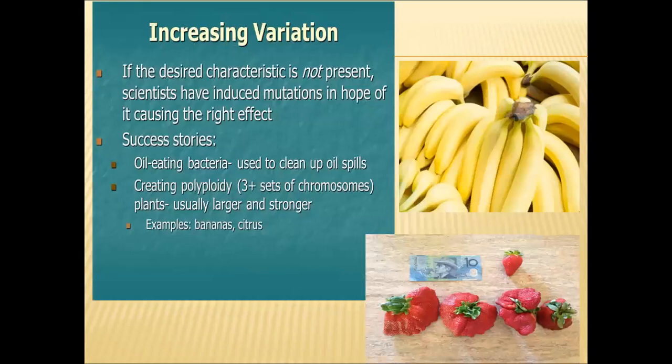Increasing variations can also be seen with selective breeding methods. If a desirable character is not present in wild animals or plants, scientists can induce mutations in hope of seeing that desirable effect. Some experiments resulted in success stories — for example, oil-eating bacteria were developed to help clean oil spills in sea waters. Polyploidy in bananas and citrus fruits also results in larger and stronger fruits.